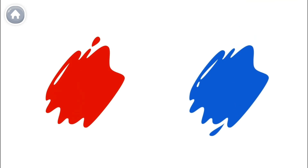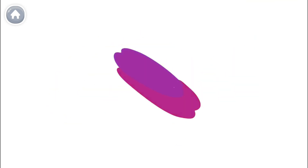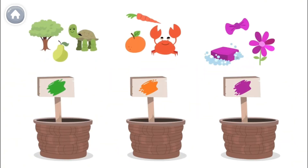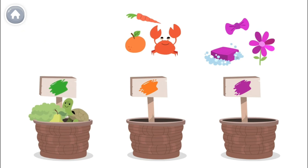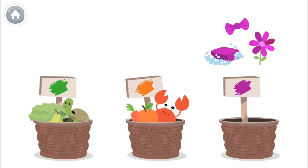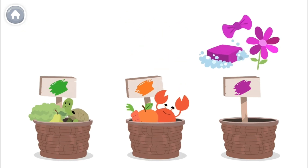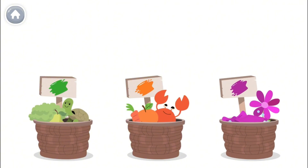This is red and blue. When you mix them together, they become violet. All of these things are violet. Let's put the green things in the green basket, the orange things in the orange basket, and the violet things in the violet basket. I love mixing colors!